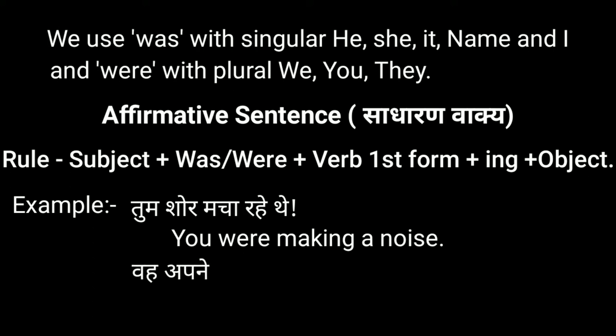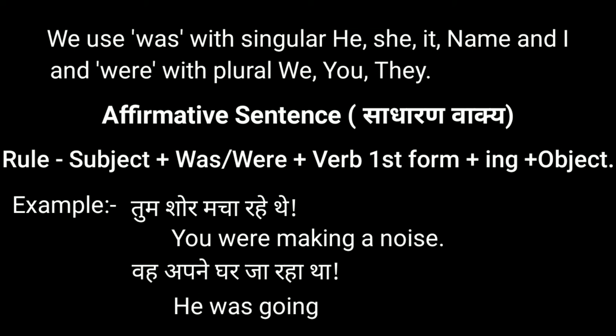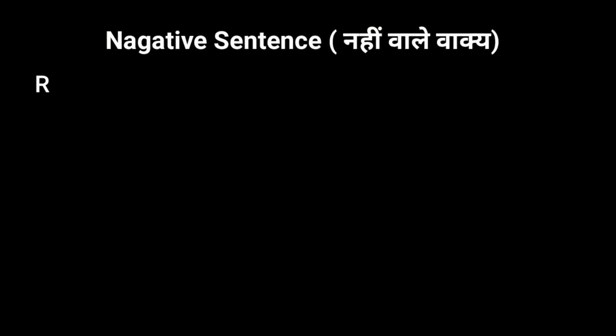Our second example: 'वह अपने घर जा रहा था' — 'He was going to his house.' In this, 'he' is the subject, 'was' is the helping verb, 'going' is the verb first form plus ing, and the rest is the object.